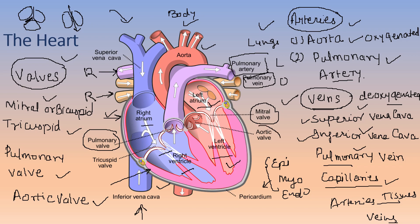The aortic valve opens when oxygenated blood is supplied through the aorta. The heart has four chambers: the right atrium, left atrium, right ventricle, and left ventricle. The superior vena cava and inferior vena cava bring deoxygenated blood from the body to the right atrium. When the right atrium contracts, blood is supplied to the right ventricle, which then contracts and sends blood to the pulmonary artery.